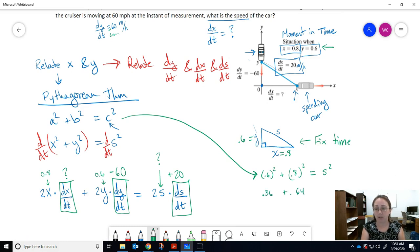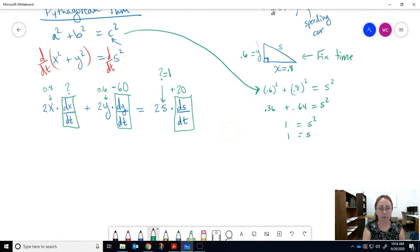So 0.6 squared plus 0.8 squared equals s squared. That would be 0.36 plus 0.64 equals s squared, so add those together and you get 1 equals s squared. So s equals 1, and we're going to use a positive one because we're talking about a distance between two vehicles.